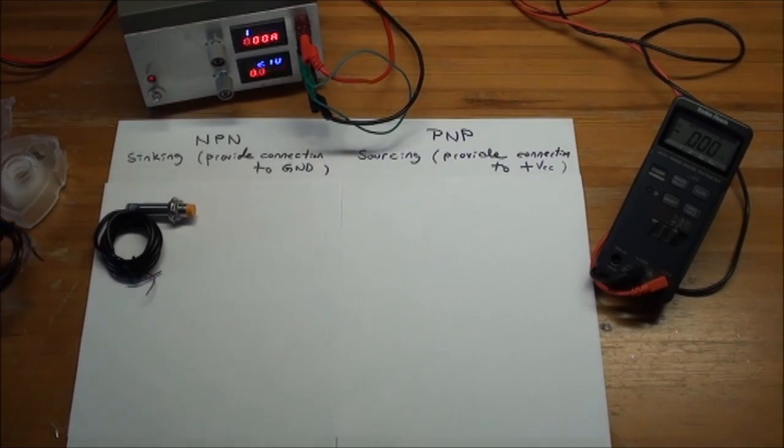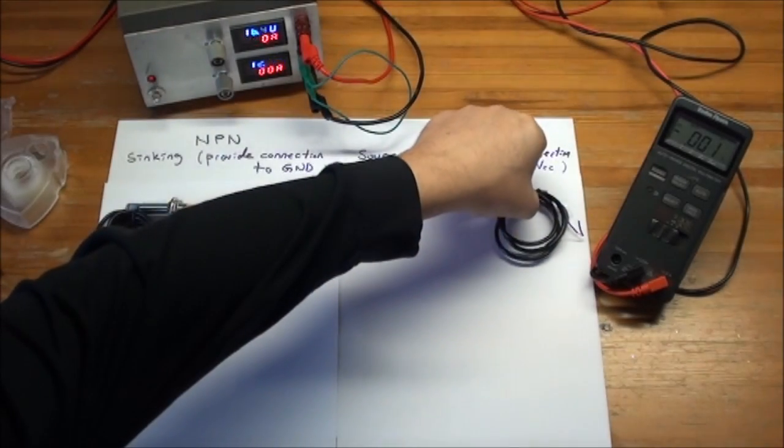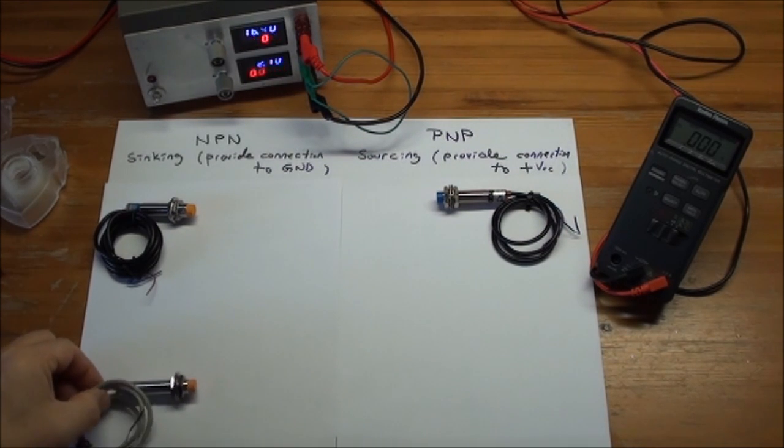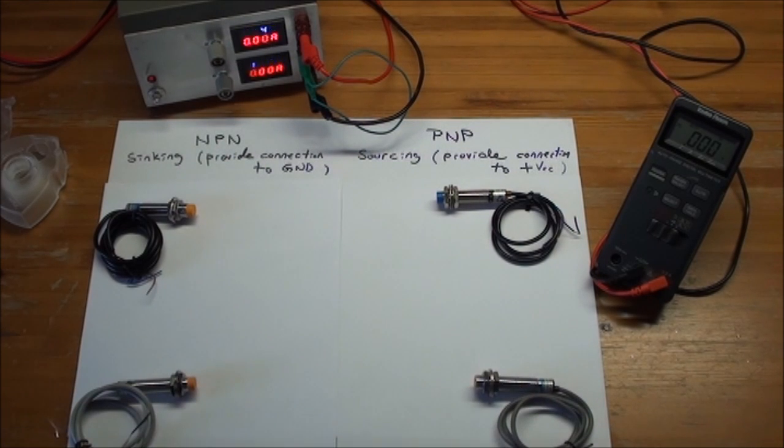So I knew that there was the PNP analog, so you have it over here. That's the PNP normally open, but you actually can also get an NPN normally closed and a PNP normally closed. So you have all four.